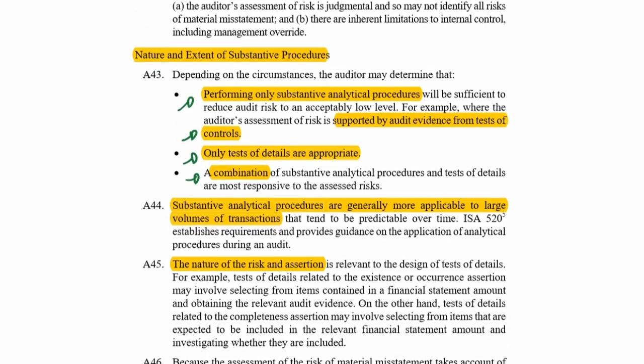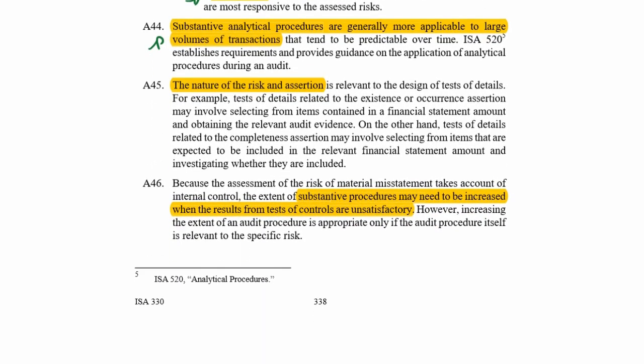Analytical procedures are generally more appropriate when there is a high volume of transactions. That's why under a combined approach, you would typically use tests of controls and more analytical procedures with less tests of detail. Substantive procedures may be increased if controls were unsatisfactory — as soon as tests of controls show controls are not working, you must increase your substantive procedures.